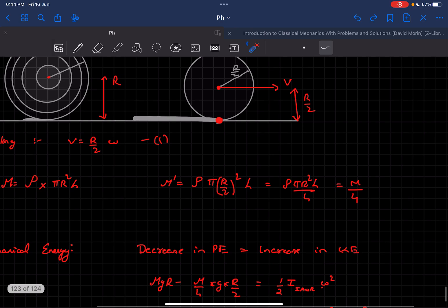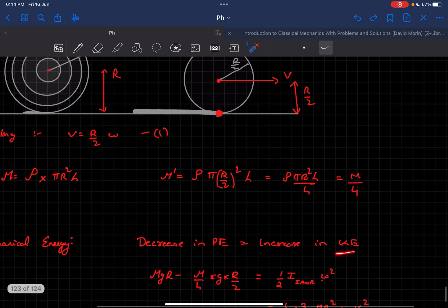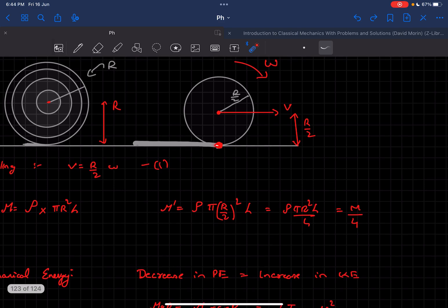Half I about the instantaneous axis of rotation times omega squared. This would be the kinetic energy of this body. How do we find the I about instantaneous axis of rotation? We are going to be using the parallel axis theorem.